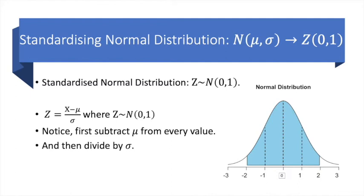And so the value of the variable Z, also called Z score, one standard deviation away from the mean is one or minus one. Likewise, two standard deviations away from the mean, the Z score is two or minus two, and so on.